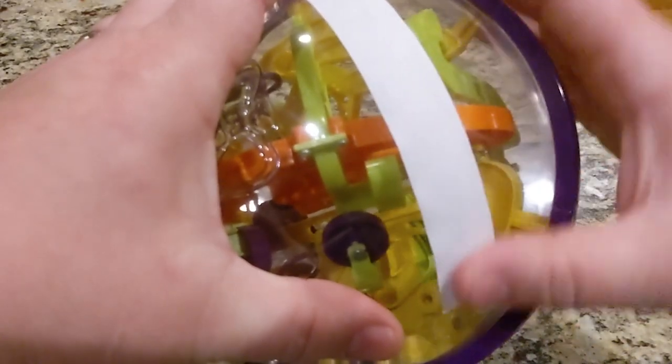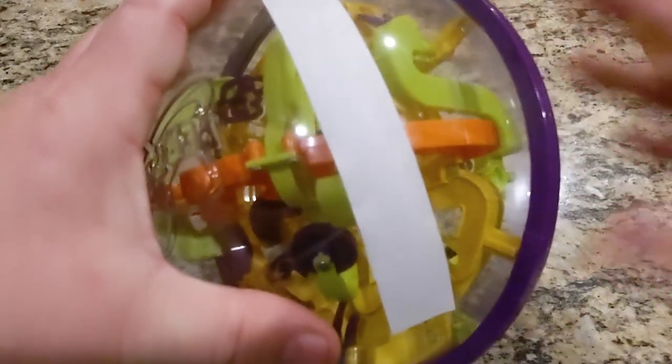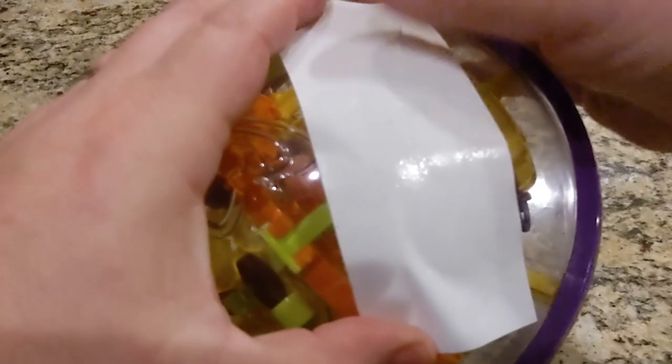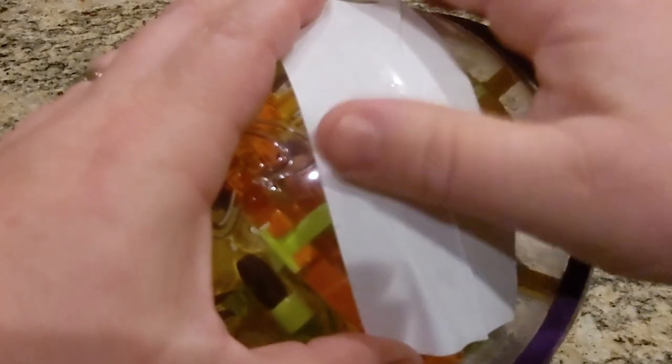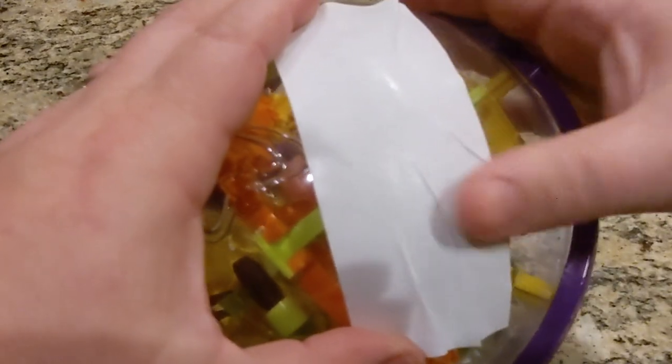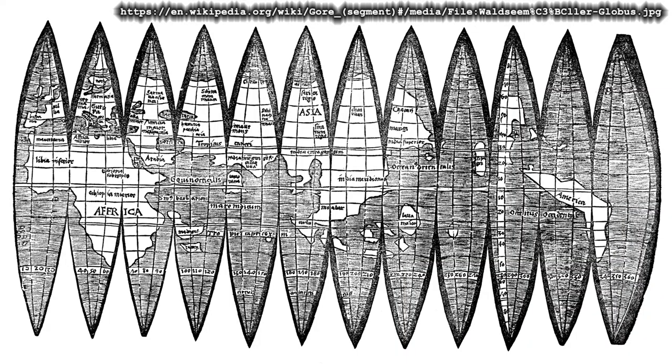We can fudge it a bit, luckily, since wet paper will mold itself to a curve. To a certain degree, anyway. As long as you cut the paper into thin enough strips, they will conform to the sphere without wrinkles. These strips are called gores.